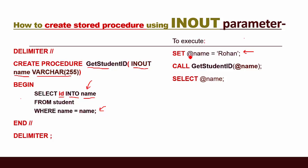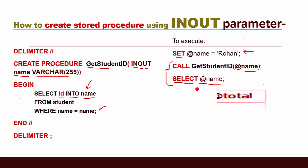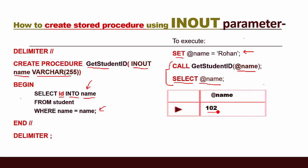To use it, we first use a SET statement: SET @name = 'Rohan' to give the input value. Then we use the CALL statement with the procedure name and @name. Once we execute it, it will take out the ID of the name Rohan. 102 is the ID of the student named Rohan.